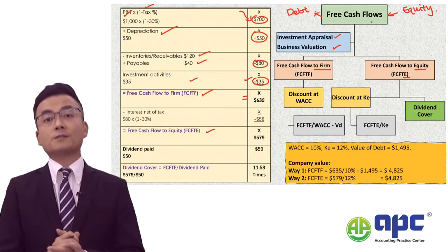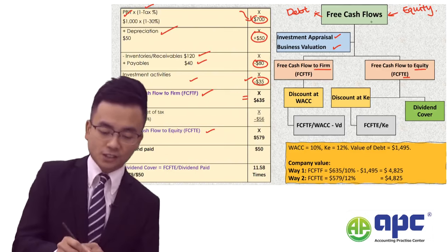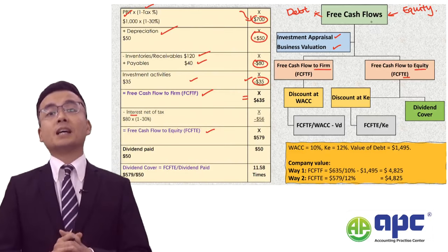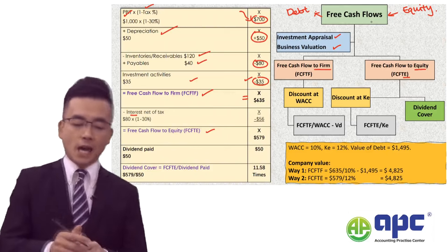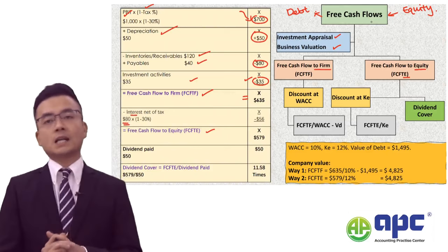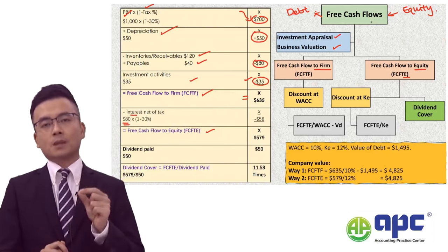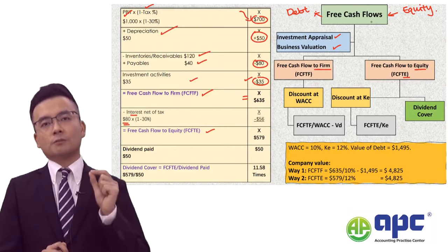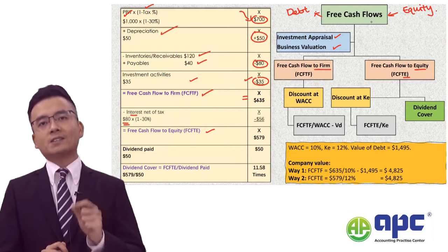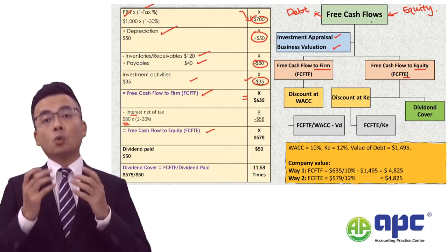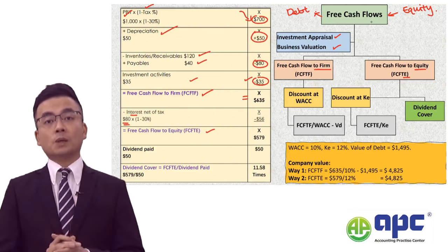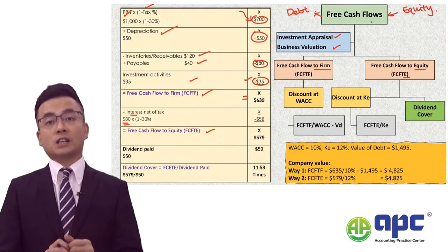From that FCFF of $635, we subtract any interest and redemption value. Here, including only the interest element of $80, we cannot simply subtract the full $80. We need to subtract the net amount — meaning interest net of tax.